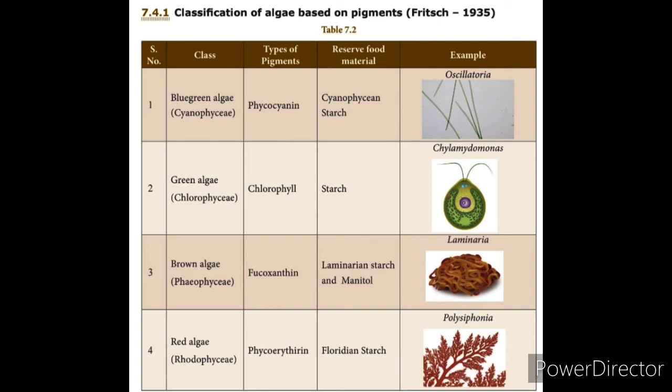Green algae contains chlorophyll as its pigment, and the reserve food material is starch. Example: Chlamydomonas. Brown algae has fucoxanthin as its pigment — that's why it appears brown — and the reserve food materials are laminarian starch and mannitol. Example: Laminaria.